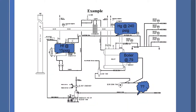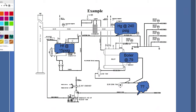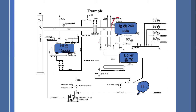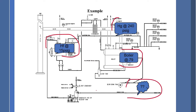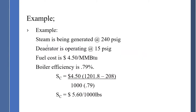As an example, we're going to use a boiler operating at 240 PSI. Our deaerator is operating at 15 PSI and our boiler efficiency is at 0.79 — though there's always the unknown of what condensate is being recovered. Fuel cost is $4.50 per million BTUs. So our calculation uses 1201.8 BTU/lb — the enthalpy of steam leaving the boiler — and 208 BTU/lb — the sensible energy of the feed water going into the boiler — divided by 1000 divided by 0.79. We come up with a fuel cost of $5.60.